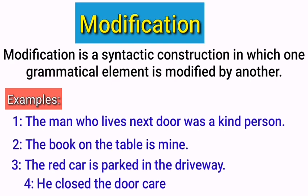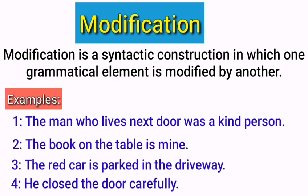'He closed the door carefully.' The word 'carefully' is a modifier in this sentence. It is an adverb which gives us information about the verb 'closed.' Without this word, we would not be able to decide how the door was closed. This word gives us information that the door was closed in a careful manner. So an adverb can also be used in the process of modification.